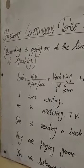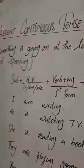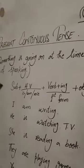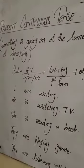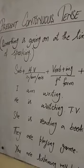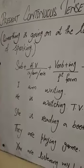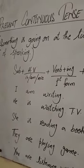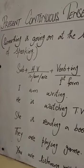Present continuous tense is used to talk about something that is going on at the time of speaking. یعنی کہ ہم اس tense کو کہاں پر یوز کرتے ہیں؟ یعنی present میں جب ہم کوئی کام کر رہے ہیں — اس وقت جو ہم کام کر رہے ہیں، اسے ہم present continuous کہتے ہیں۔